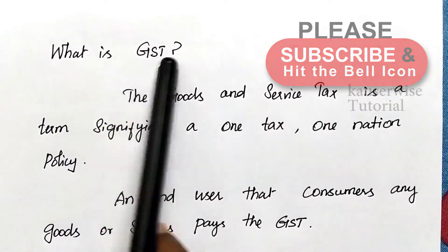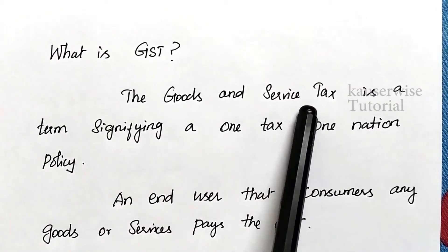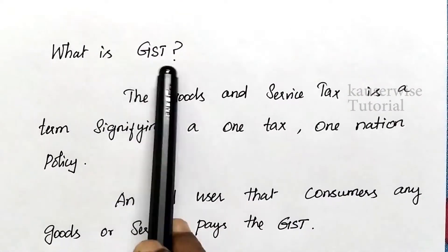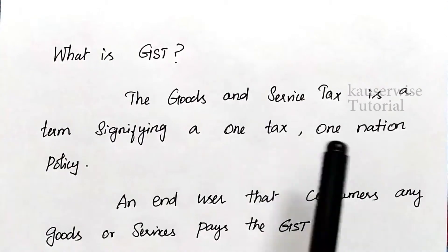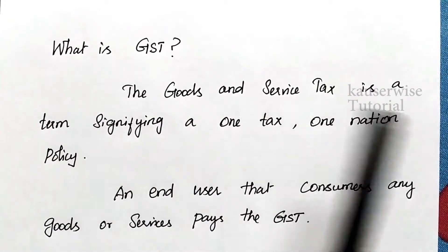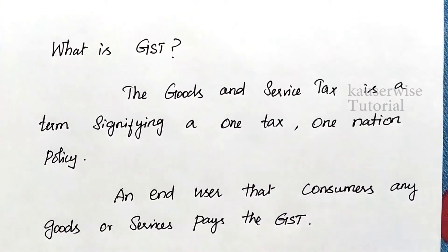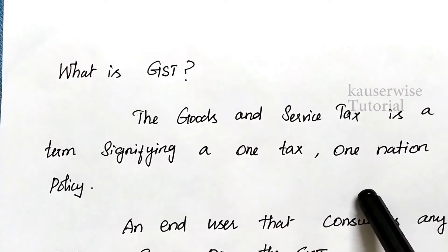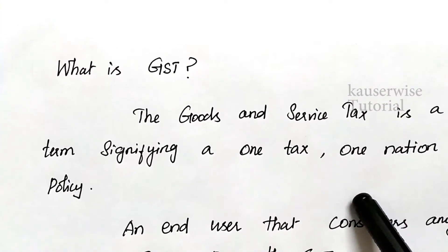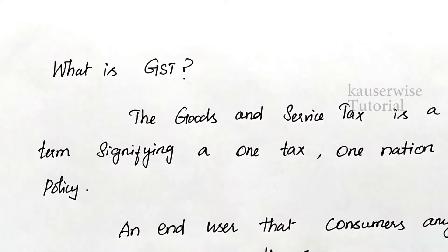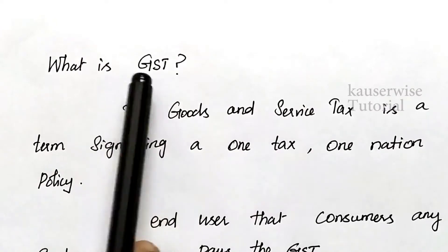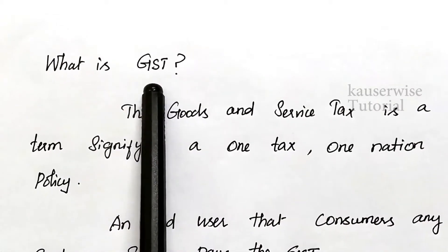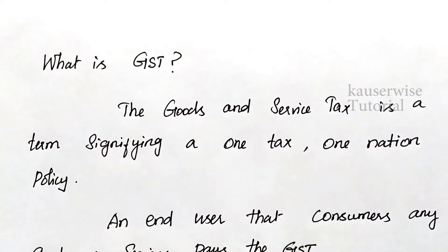What is GST? The term GST refers to Goods and Service Tax, signifying a one-tax and one-nation policy. The same tax plan is applicable for the entire nation. Before the introduction of GST, there were multiple taxes like service tax, central excise, and state value added tax (VAT). All these have been replaced by GST.